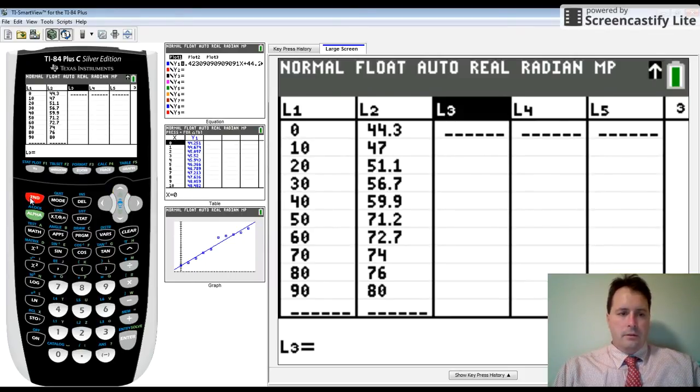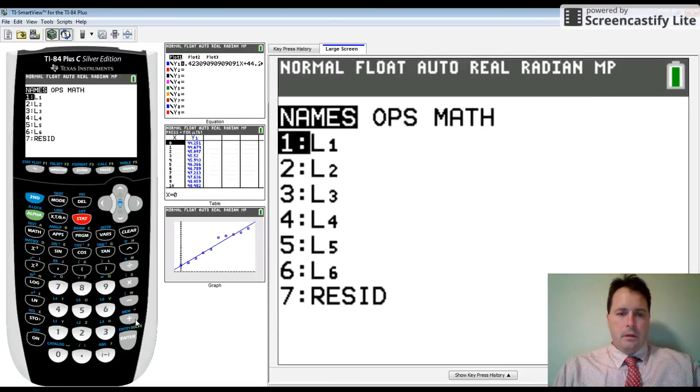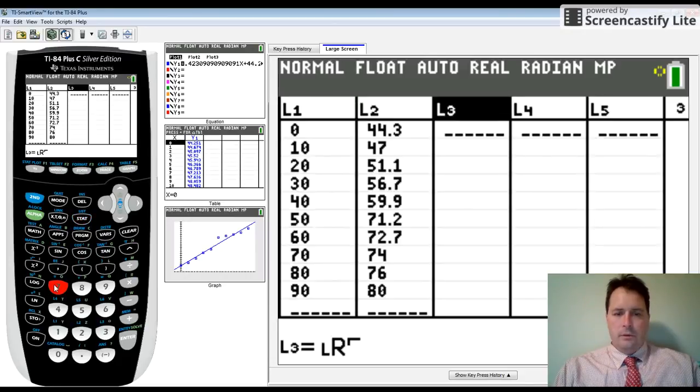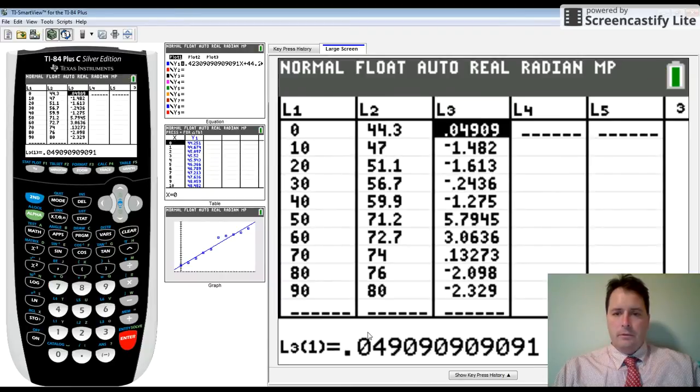Once you're there, you're going to hit second stat, choose number seven which is residual, and when you hit enter, the whole column fills in.